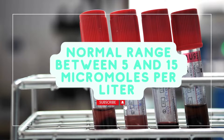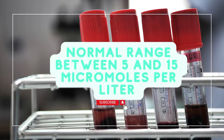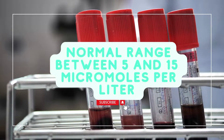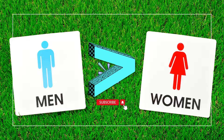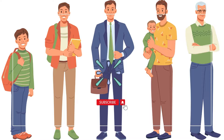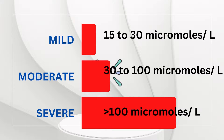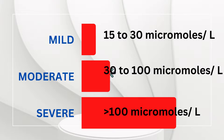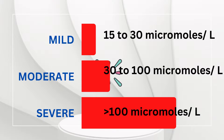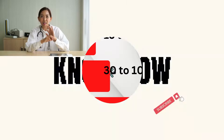Normal homocysteine concentrations range between 5 and 15 micromoles per liter in the blood. Homocysteine levels are typically higher in men than women and increase with age. 15 to 30 micromoles per liter is considered slight elevation, 30 to 100 micromoles per liter is moderate elevation, and more than 100 micromoles per liter is considered severe elevation.